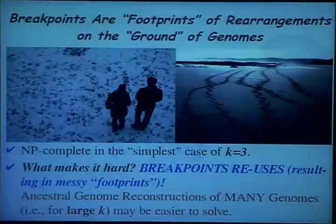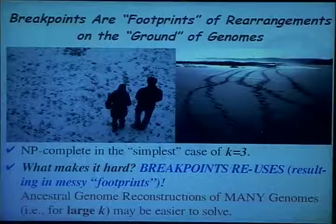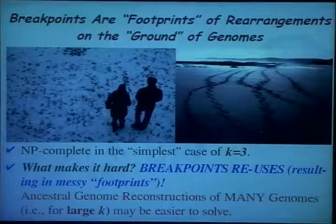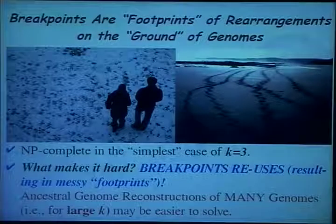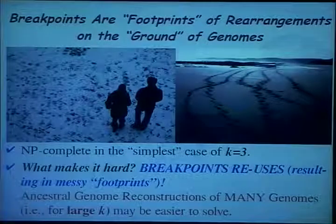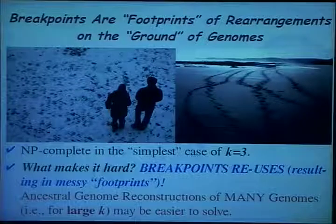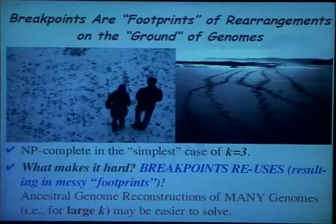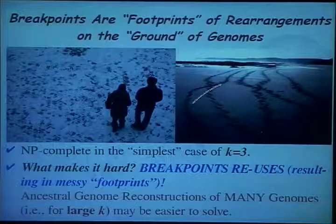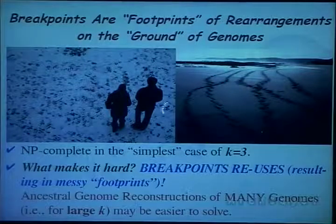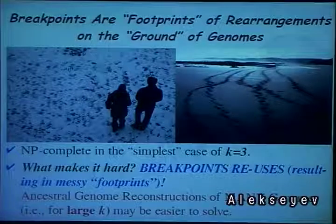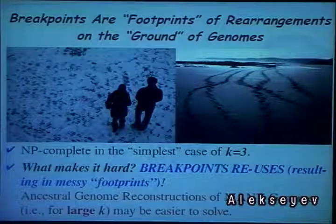What makes the problem hard is breakpoint reuses. You may think of breakpoints as footprints of rearrangements on the genome. If the genome is small and there are many rearrangements, it becomes messy and hard to trace them. However, if there is a lot of genomic material, we can easily trace the rearrangements. My personal belief is that having many genomes simplifies the problem.